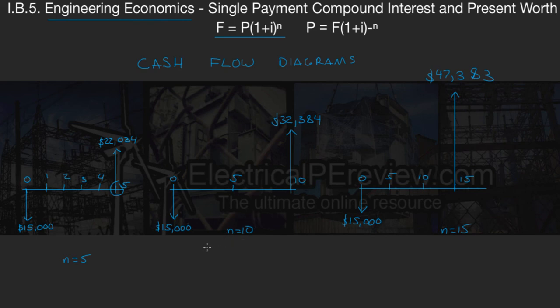We would just take our future amount, F, minus our present. So we would have that $32,384 that he withdrew, and we would subtract it from his initial deposit of $15,000. We run the numbers in our calculator, and we come up with a total of $17,384. And again, we got that by taking our future amount, F, and subtracting it from our present worth.